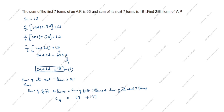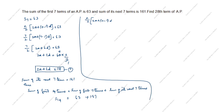Now applying the sum formula for S14: n by 2, open bracket, 2a plus (n minus 1) into d, equals 224. Here n is 14, so we write 14 divided by 2, open bracket, 2a plus 13d, equals 224.